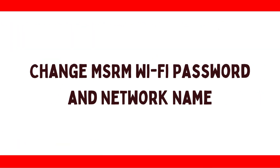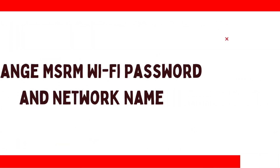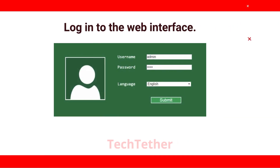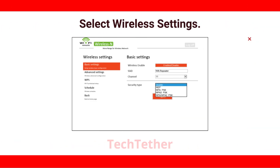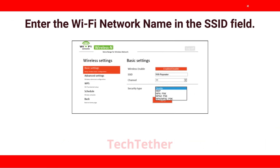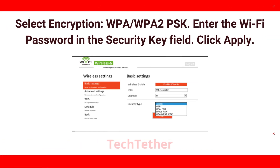To change the MSRM Wi-Fi password and network name, login to the web interface and select wireless settings. Enter the Wi-Fi network name in the SSID field, then select encryption: WPA or WPA2PSK.